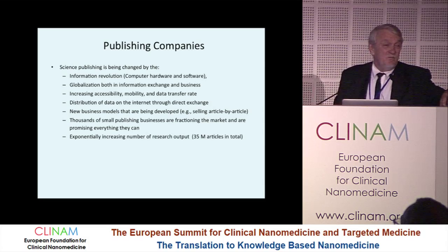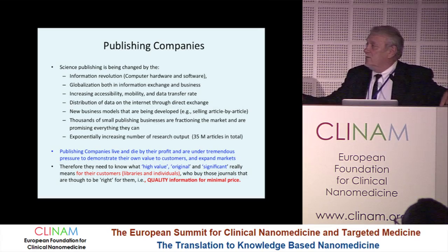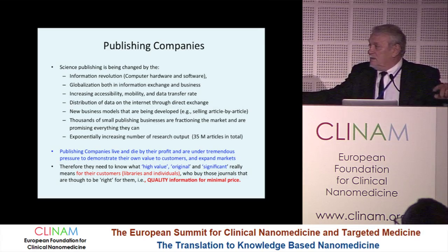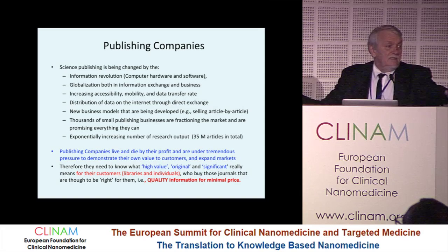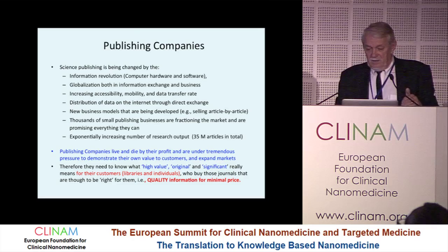There is an exponentially increasing number of research outputs. As I said, 35 million papers are in the database, and about 28,000 journals are in Scopus. Publishing companies live and die by profit, so they are determined to demonstrate their value to customers and keep expanding their markets. They need to know what high-value, original, and significant means to their customers — individuals and libraries — who are trying to find quality information at minimal price. Finding a balance between these two areas is what's really important.